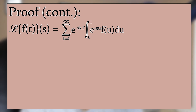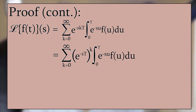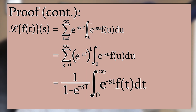We recognize the sum as a geometric series, since the absolute value of e to the negative s T is strictly less than 1, so it converges. Using the geometric series formula gives 1 divided by 1 minus e to the negative s times T, multiplied by the integral from 0 to T of e to the negative s times t, times f of t dt. That completes the proof.